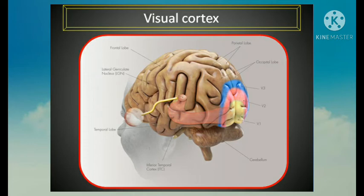The primary visual area is concerned with the reception and perception of isolated visual impressions such as color, size, form, motion, illumination, and transparency. The secondary visual area, or visual association area, corresponds to Brodmann's areas 18 and 19.